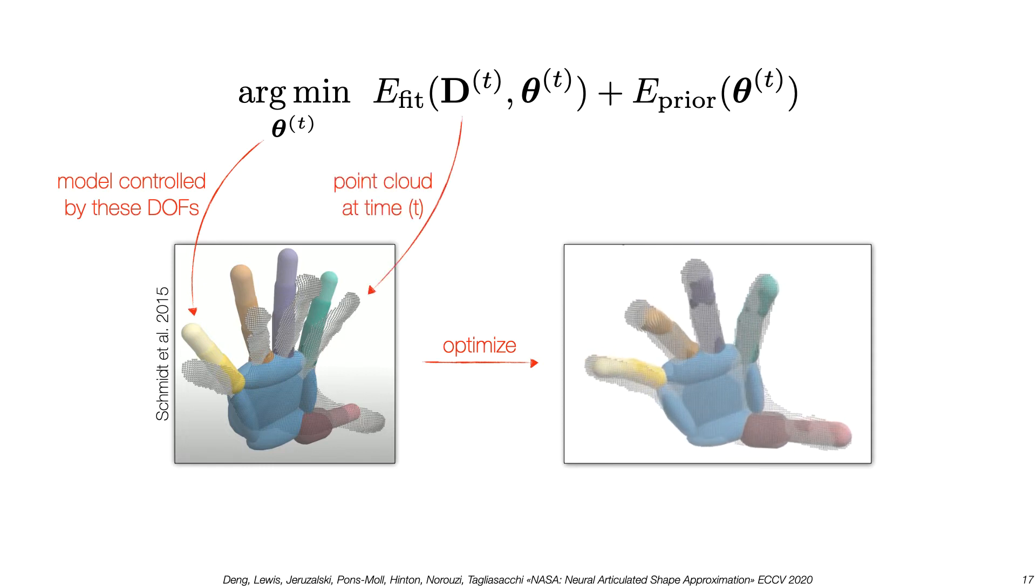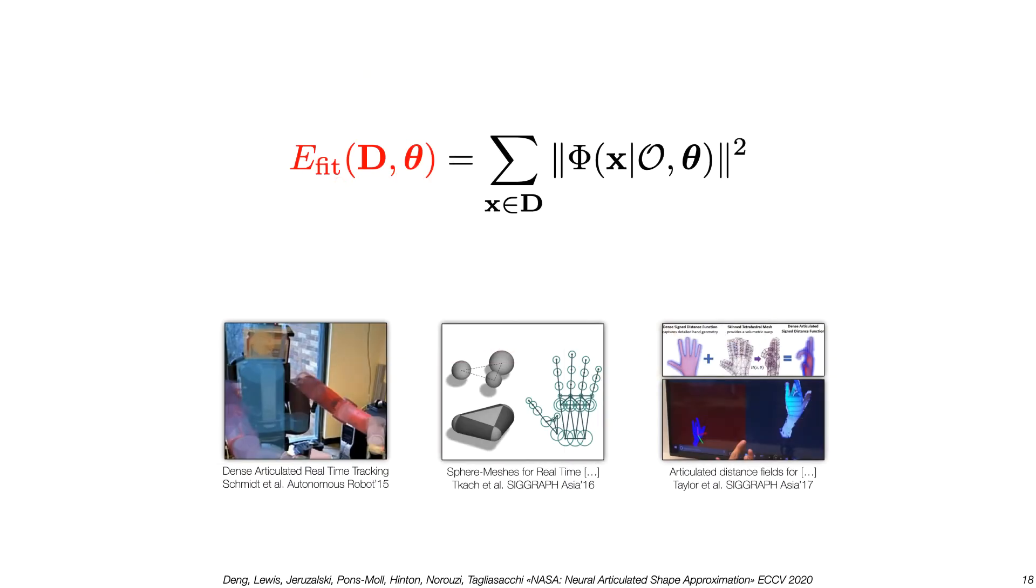Let's start by looking at the fitting energy. Most techniques use a fitting energy of this form, which relies on the ability to compute signed distances of 3D points. To compute this efficiently, past works rely on representations like rigid bodies, sphere meshes, or articulated distance fields.